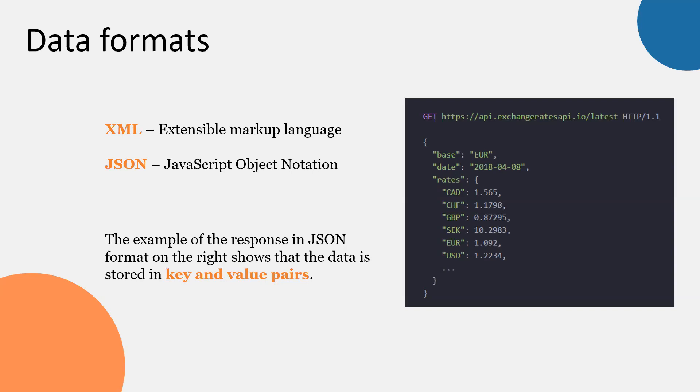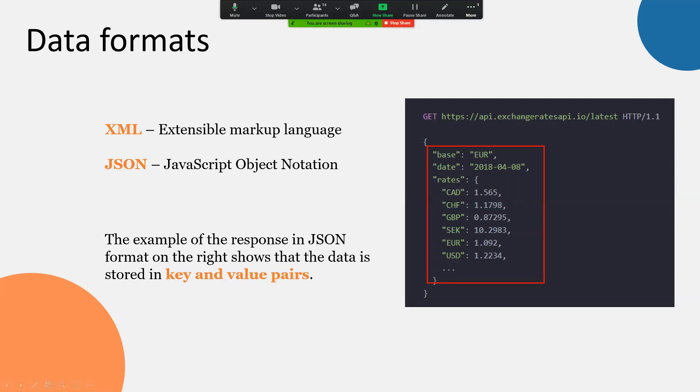On the right side you can see an example of a response from the API we're going to connect to today. It's structured in a very particular way. Every time you work with JSON, you're working with key and value pairs. Here we have 'base' as our key, and in this case the value is euro. Then we have the key 'date' with the value of a certain date. Another key is 'rates', and inside this key we have a nested structure with the actual currencies behaving as keys — pound sterling, euro, American dollar — and the exchange rate is the value for each currency. This is how a JSON response is structured.